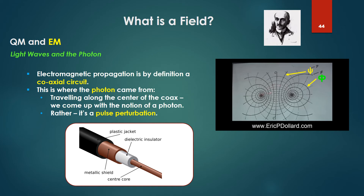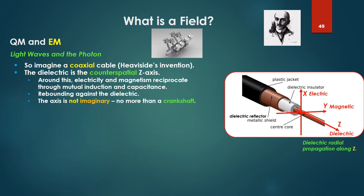Wheeler argued that electromagnetic propagation is, by definition, a coaxial circuit. This is where the notion of the photon comes from. We have a coax cable with the center core, the metallic shield around the dielectric insulator, then the plastic jacket. Traveling along the center of the coax, we come to the notion of a photon — but rather, it's a pulse perturbation. Imagine a coaxial cable: the dielectric is the counter-spatial z-axis. Around this, electricity and magnetism reciprocate through mutual induction and capacitance — the wave with its electric and magnetic components at 90 degrees to each other propagating down the cable, with the dielectric propagation simultaneously along the z-axis. These rebound against the dielectric reflector, which is the metallic shield.